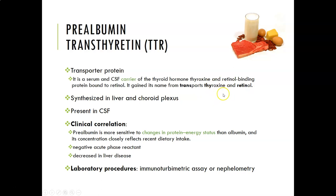Thyroxine is used to build thyroid hormones, and you also need vitamin A to build thyroid hormones, so it's pretty cool because they're just transported together. It is synthesized in the liver and the choroid plexus — the choroid plexus is up in the brain and is part of what makes spinal fluid — and obviously prealbumin is present in spinal fluid.